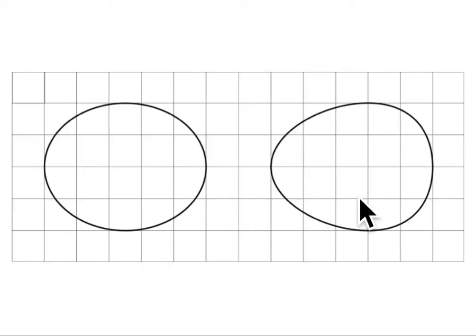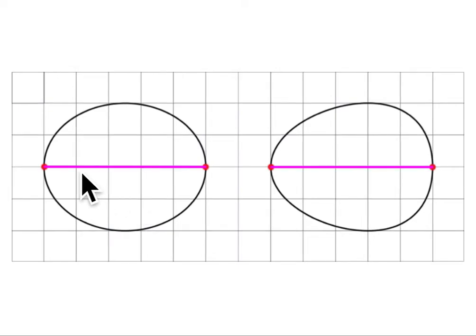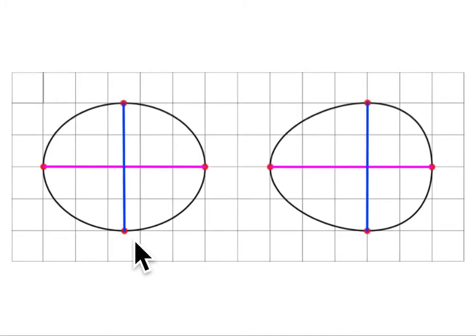These two ovals, although the distance across is the same—it's five units, 1-2-3-4-5, 1-2-3-4-5—and the distance from the topmost part to the bottom part is also the same, 1-2-3-4 and 1-2-3-4, but notice where the position is of the top point in each case and the bottom point.